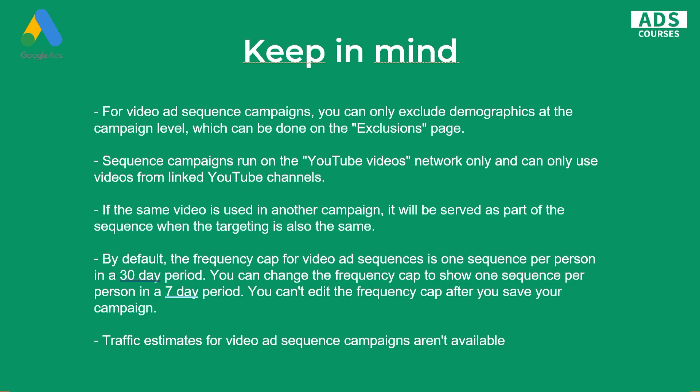Sequence campaigns run over the YouTube videos network only, so you won't be able to show your sequence campaigns outside of YouTube. You also need a YouTube channel linked to your Google Ads account. And if the same video is used in another campaign, it will be served as part of the sequence when the targeting is also the same.